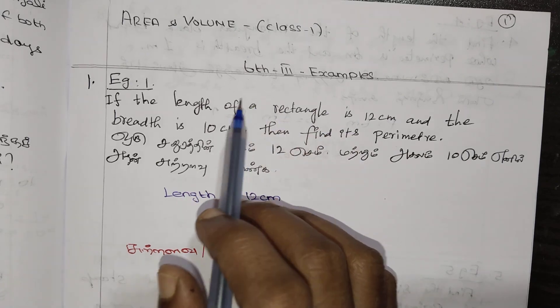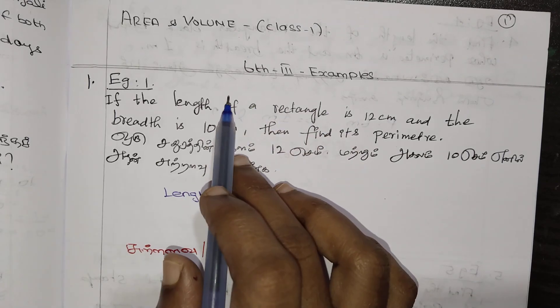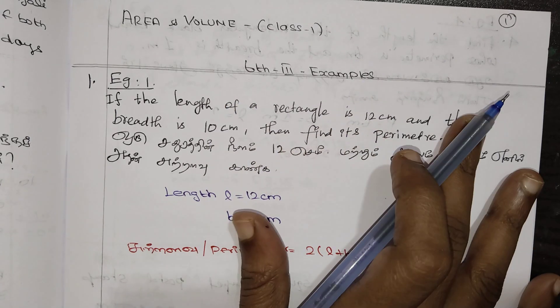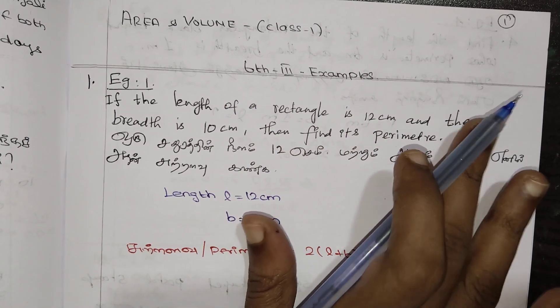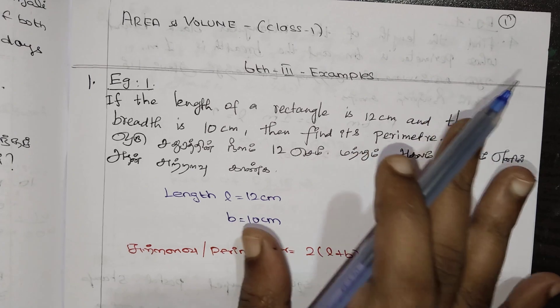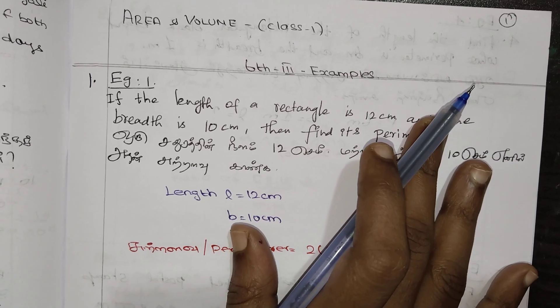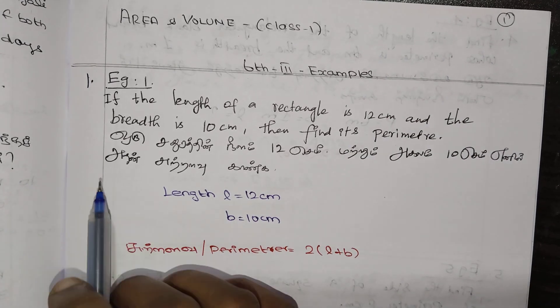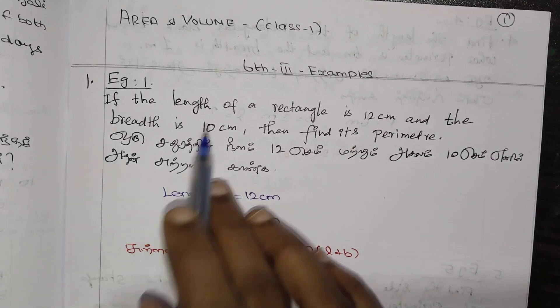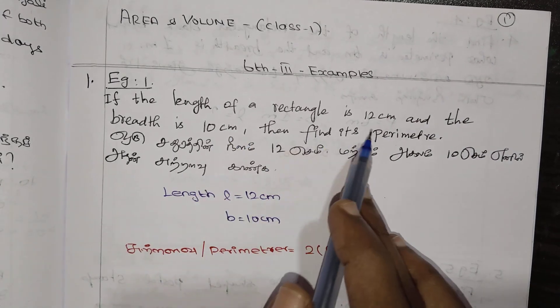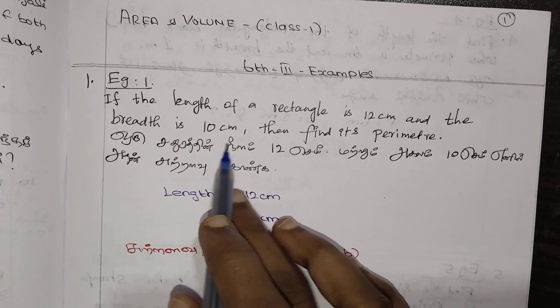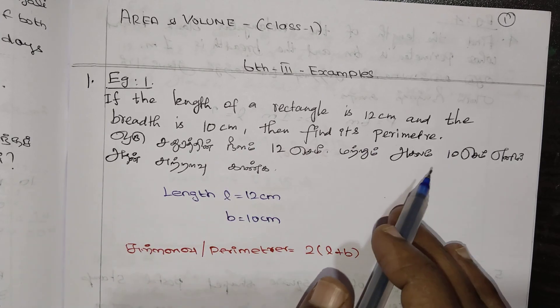In the first class, we are going to show examples. If the length of a rectangle is 12 cm and the breadth is 10 cm, find its perimeter.